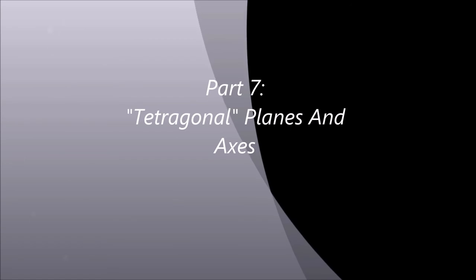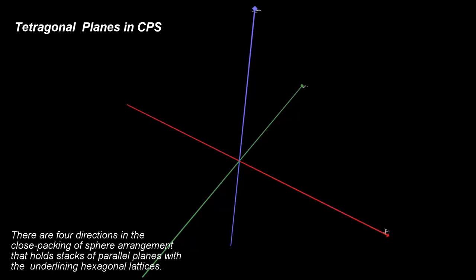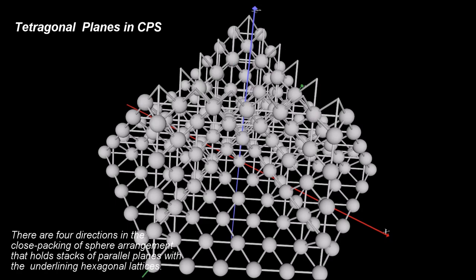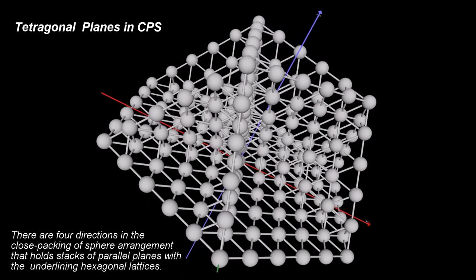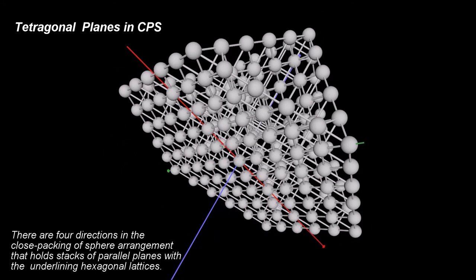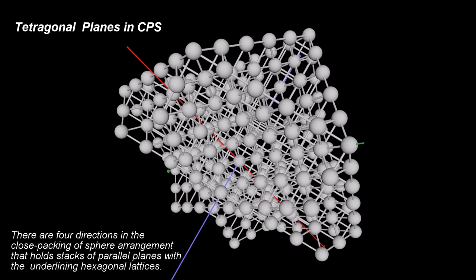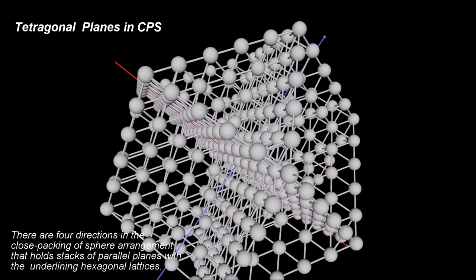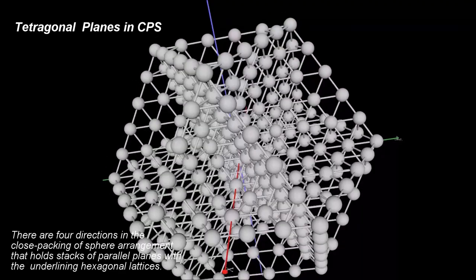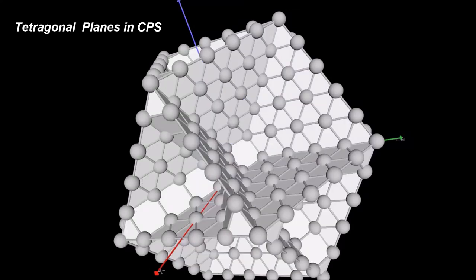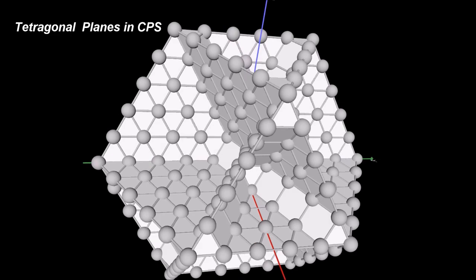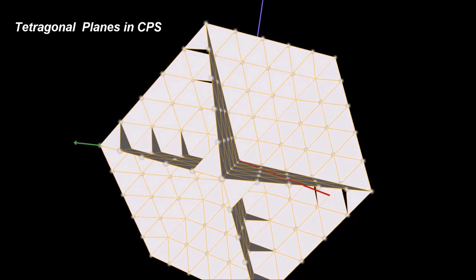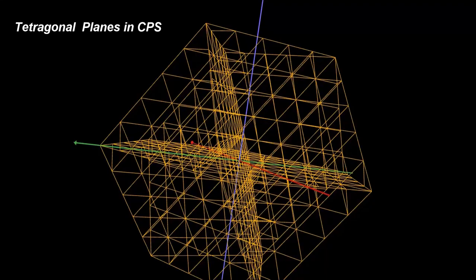Part 7: The Tetragonal Planes and Axes. First, let's introduce an abbreviation: let's call the close packing of spheres arrangement the CPS arrangement. A similar investigation of the CPS arrangement reveals that there are 4 more directions in the close packing of spheres which are defined by stacks of parallel planes. All these planes have an underlying hexagonal pattern. For consistency with the orthogonal planes defined already, we will introduce a new term to express the relationships among the directions of these 4 sets of planes. We will say that these 4 planes are tetragonal to each other.